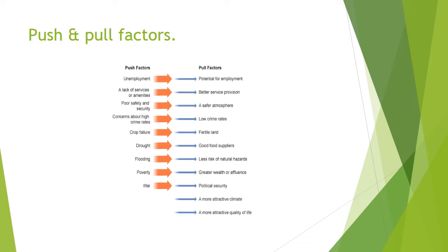Crop failure, drought, flooding, poverty, and war are all negative push factors. On the other hand, fertile land, good food supply, less risk of natural hazards, political security, great wealth or affluence, a more attractive climate, and a more attractive quality of life all come under pull factors.